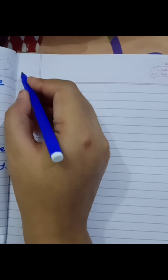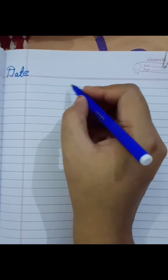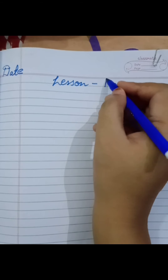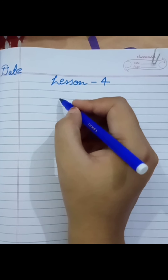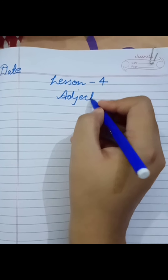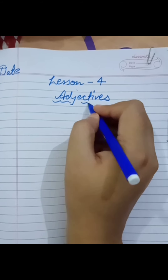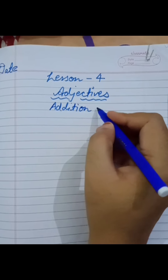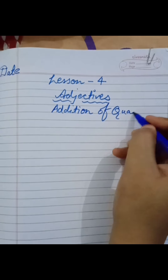Class 3, I hope Chapter 3 work is completed. Now today we will start Chapter Number 4 — Addition of Qualities. Firstly, write the date in your English grammar copy. This is Lesson Number 4, and this chapter is about adjectives. I will tell you what adjectives are. The name of the chapter is Addition of Qualities.